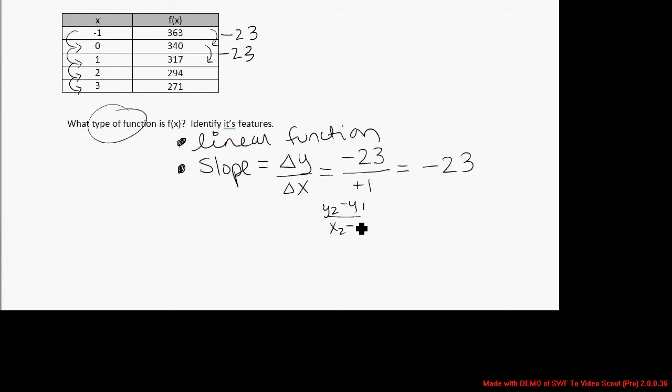If you prefer, you can always do y2 minus y1 over x2 minus x1 for any points in the table. For example, you could travel from the point where x equals 2 to the point where x equals 3. y2 minus y1 over x2 minus x1, you will see that it's negative 23 over 1. I also see in the table that the y-intercept of this line, the point where the x value is 0, is the point 0, 340.